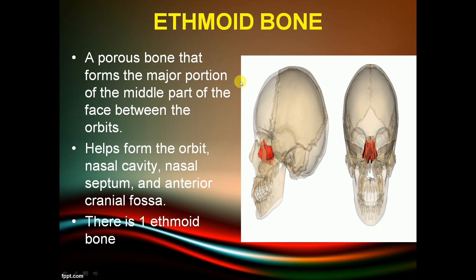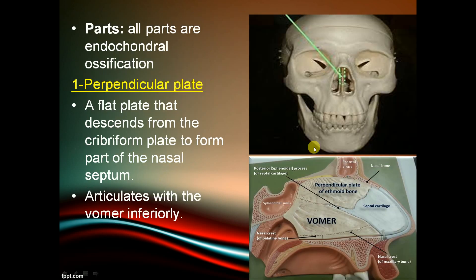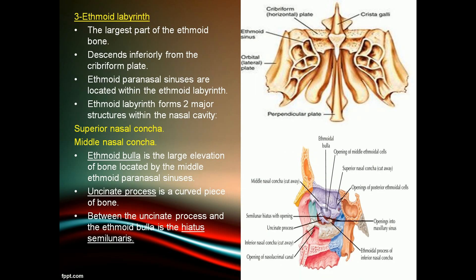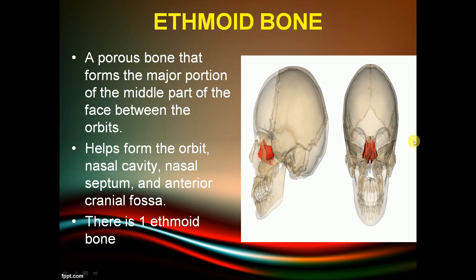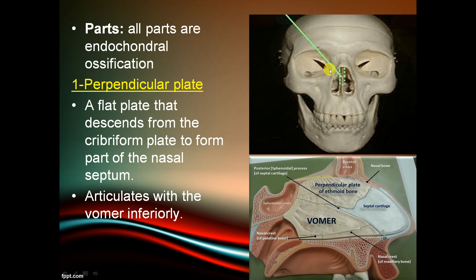The ethmoid bone is a porous bone that forms the major portion of the middle part of the face between the orbits. It helps form the orbit, nasal cavity, nasal septum, and anterior cranial fossa. There is one ethmoid bone. Its perpendicular plate extends from the cribriform plate to form part of the nasal septum.